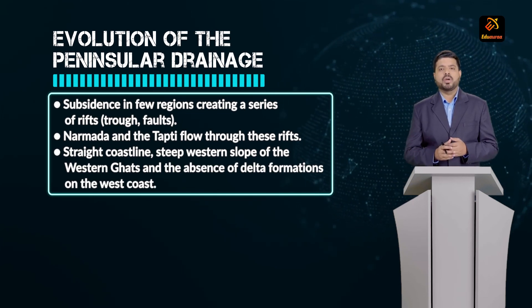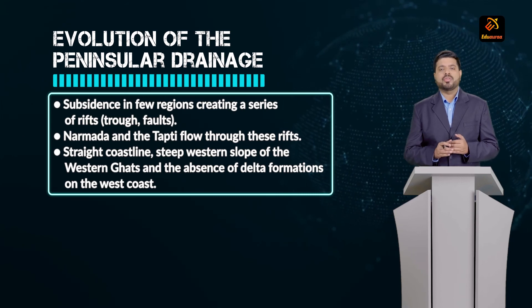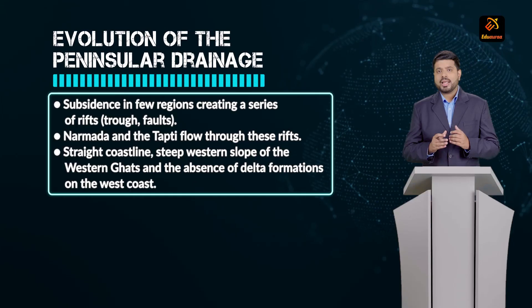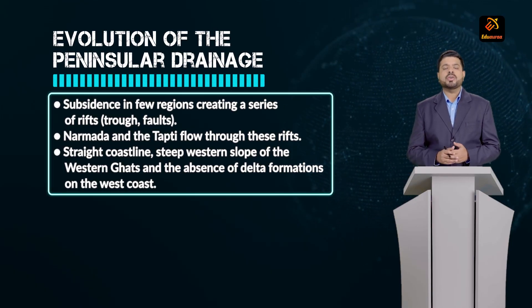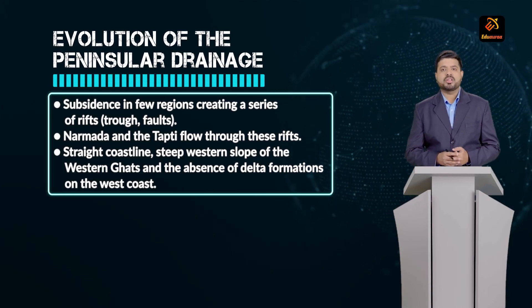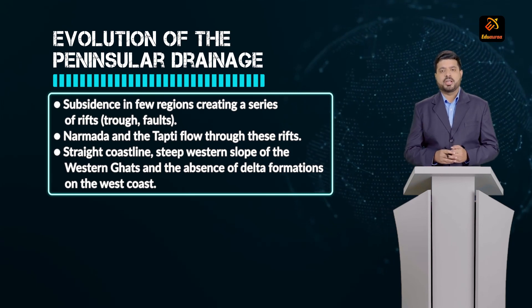Other rivers flow along the steep coastline from the western slope towards the Arabian Sea, and some towards the eastern coast. This theory is proven correct because of the straight coastline, steep western slopes, and the absence of delta formations on the west coast.